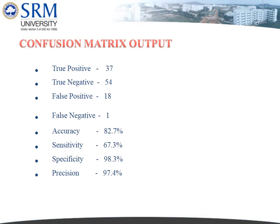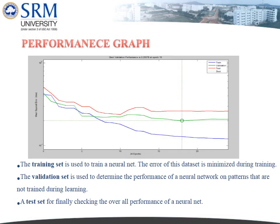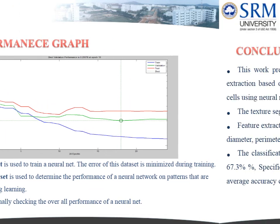The classifier yields accuracy of 82.7%, sensitivity of 67.3%, specificity of 98.3%, and precision of 97.4%. The ROC graph shows accuracy values above the average. Receiver operating characteristic analysis is an established method of measuring diagnostic performance in medical imaging studies. The performance graph shows more testing value than the validation and training values.